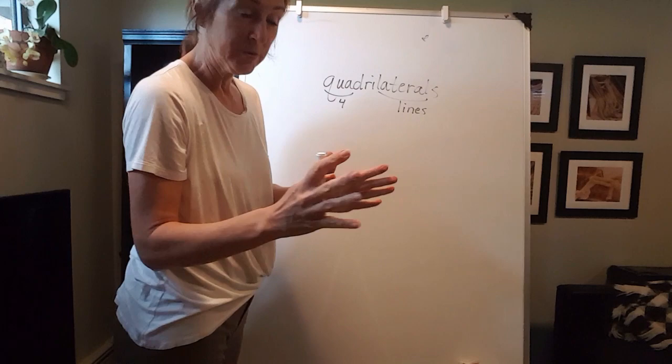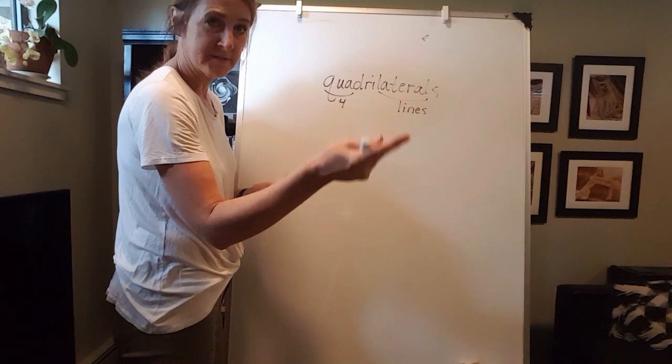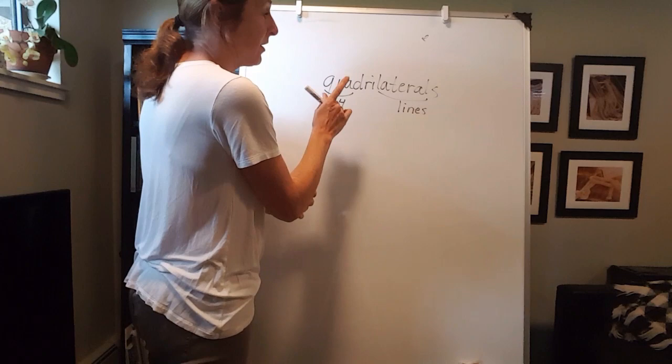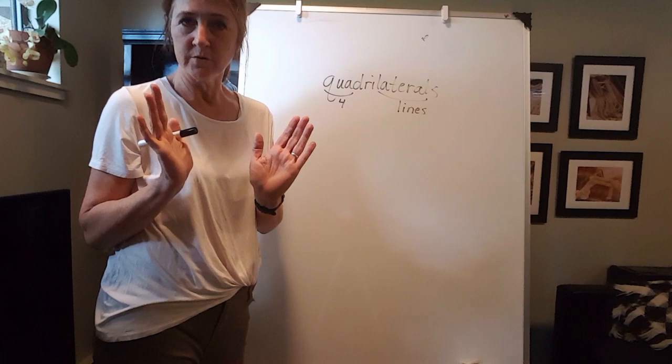Quadrilaterals have four sides. A good way to remember this is 'quad' like in quarter — four quarters in a dollar. Quad as in a quad that you ride around on has four wheels. Quad means four, lateral means lines. So a four-sided polygon. There are a whole bunch of shapes, or polygons rather, that are classified as quadrilaterals because there are a lot of different ways to make a four-sided polygon.